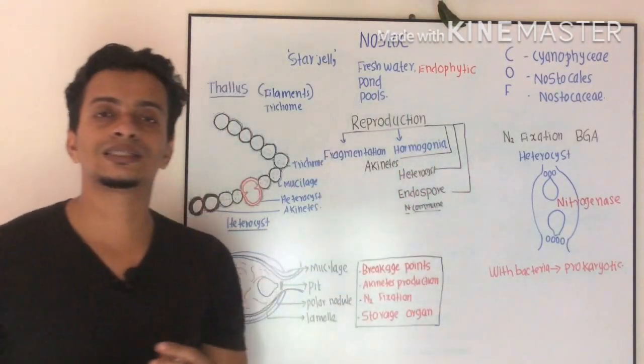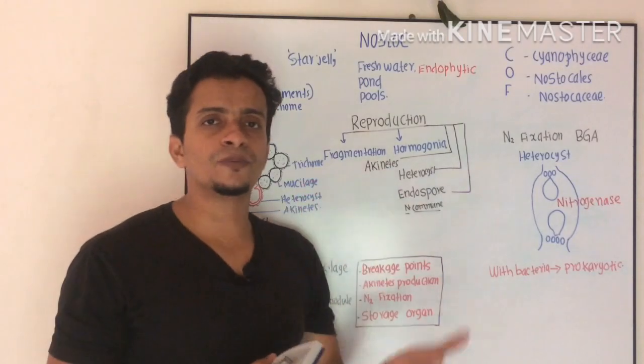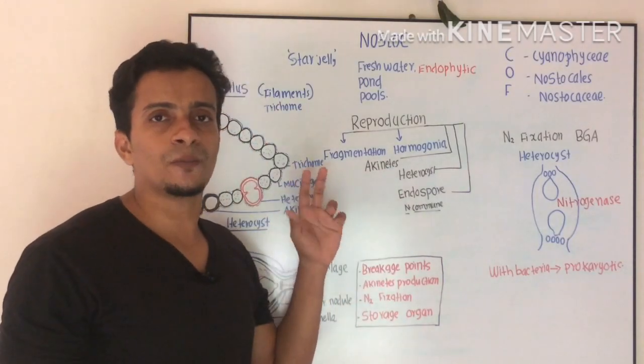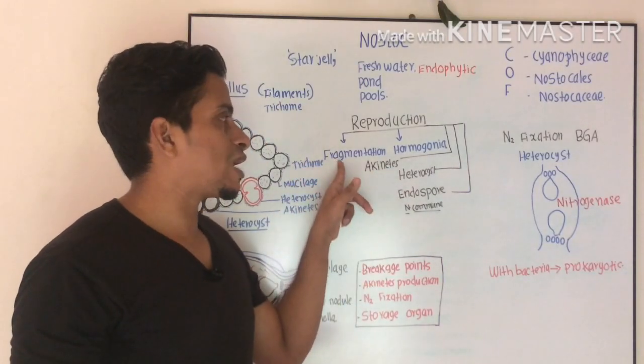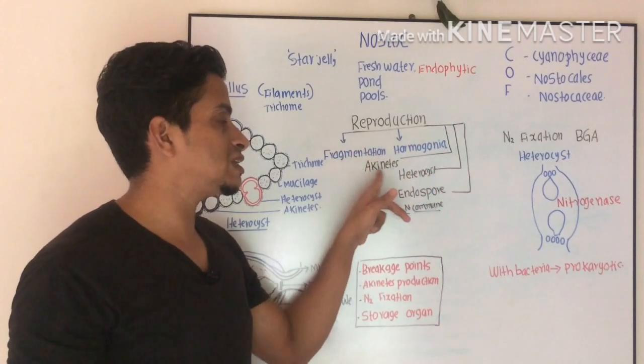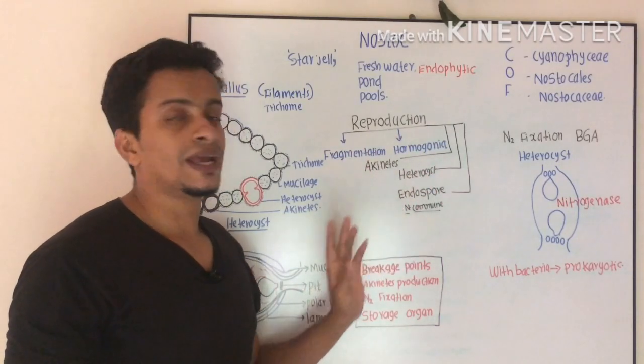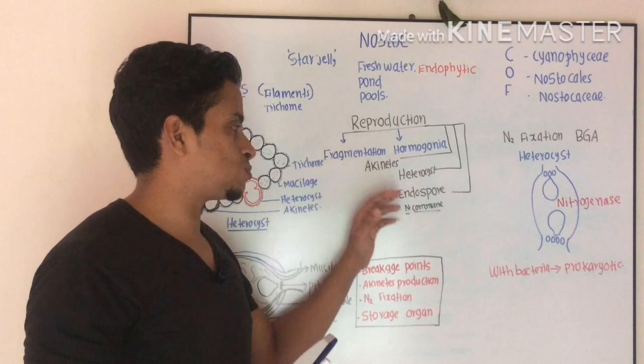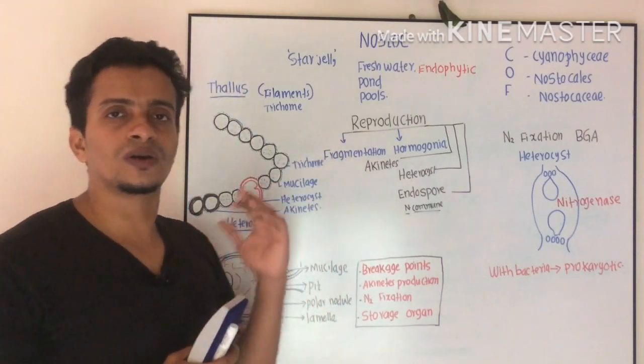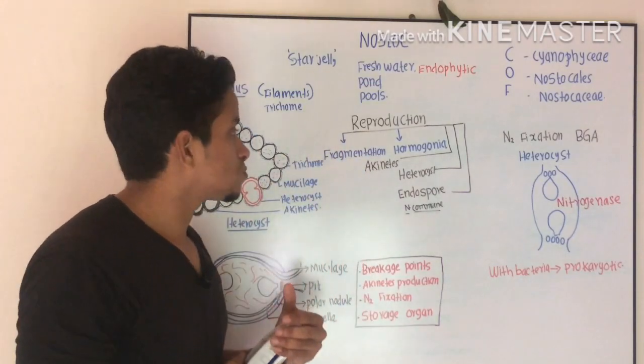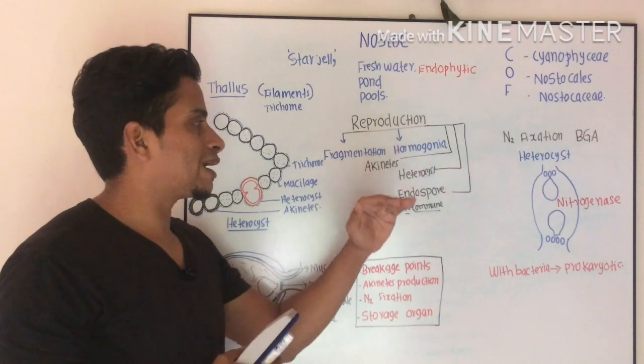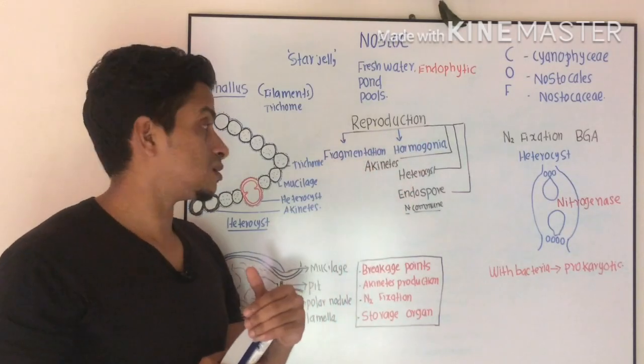Next, reproduction. It is reproduced by five major methods: fragmentation, hormogonia, akinetes, heterocyst, and endospore. Fragmentation, hormogonia, and akinetes are already taught.